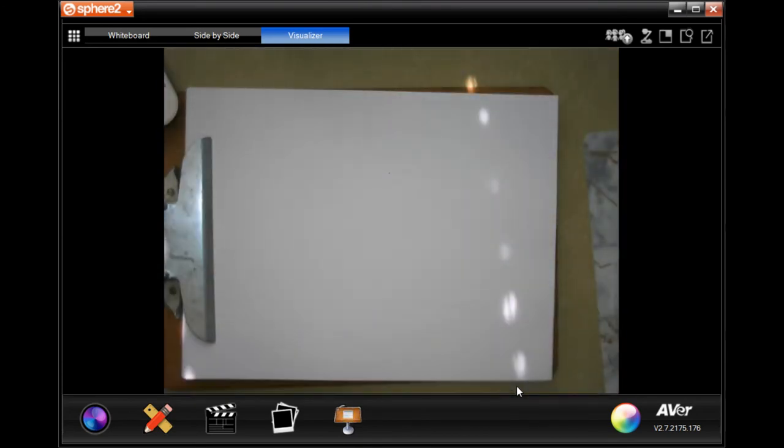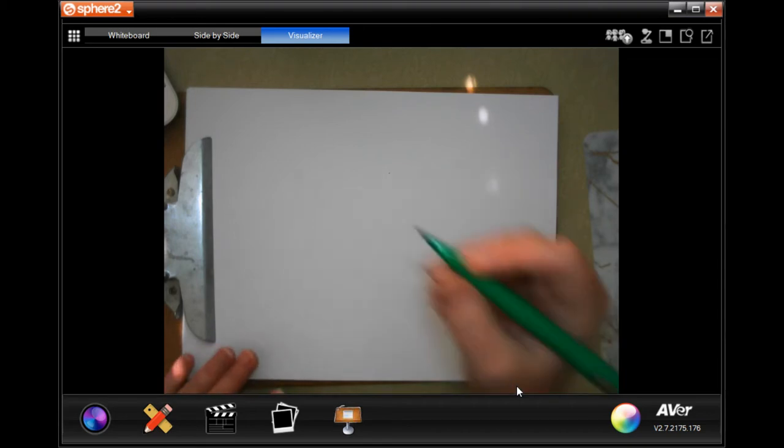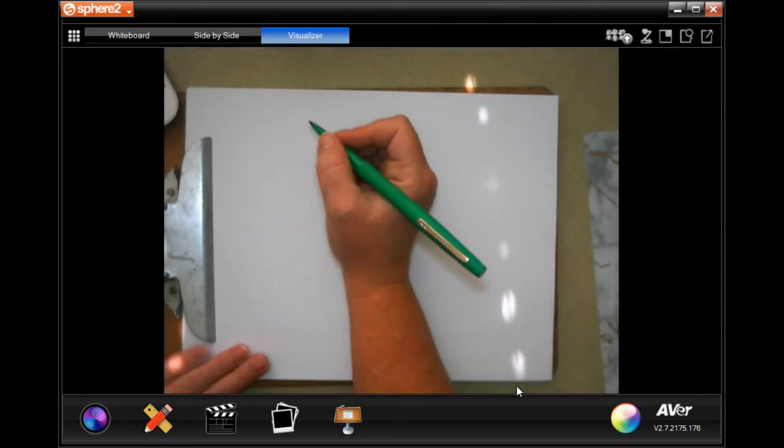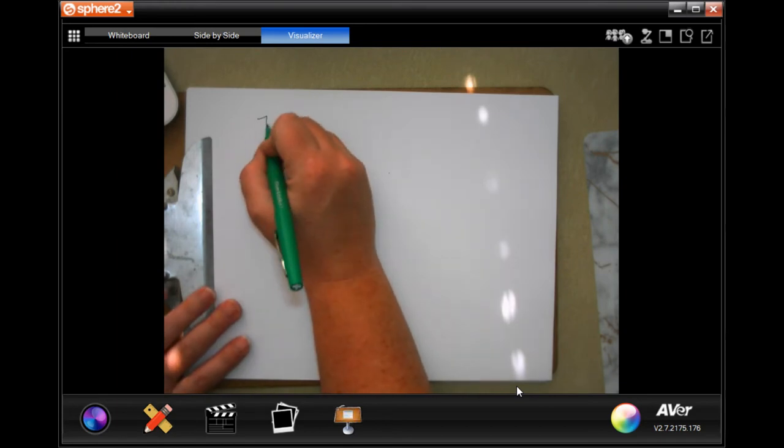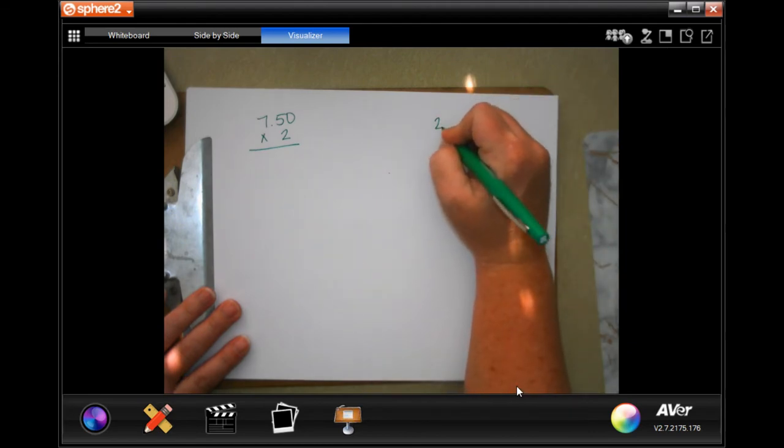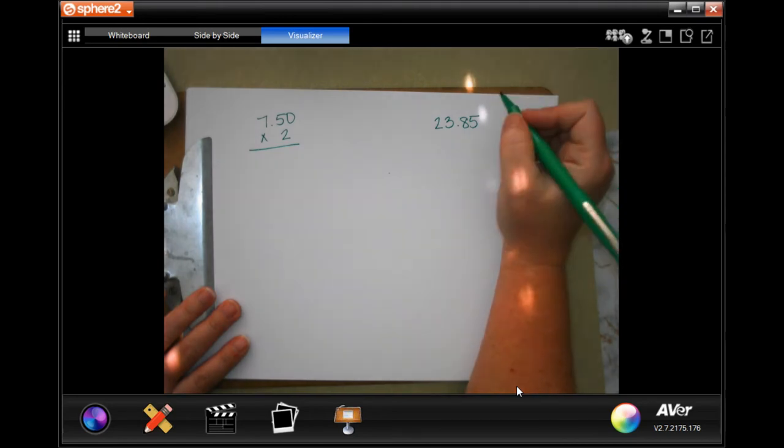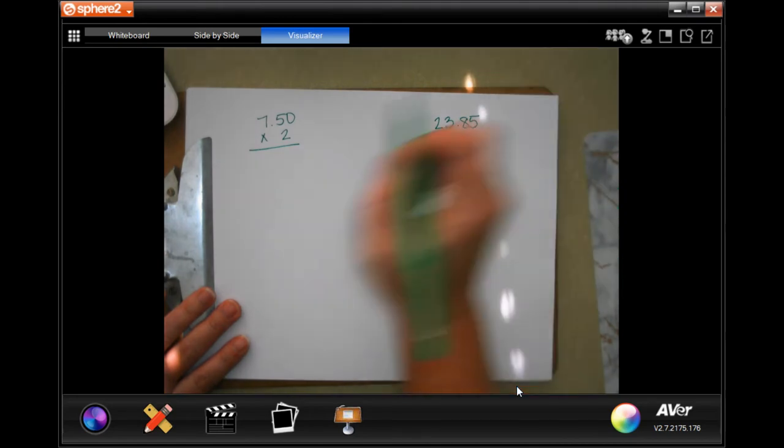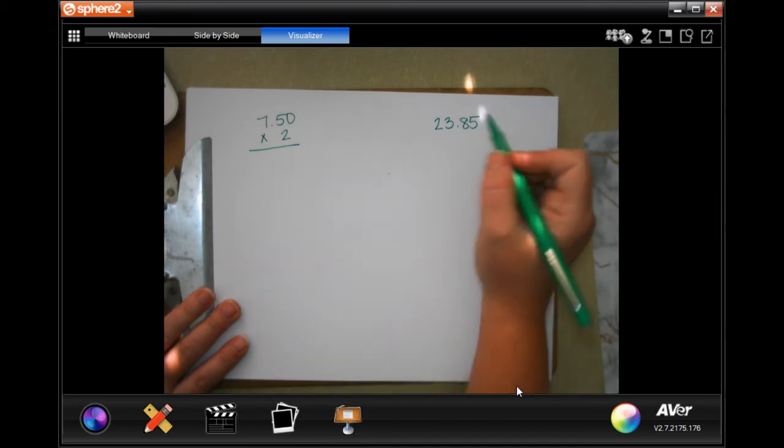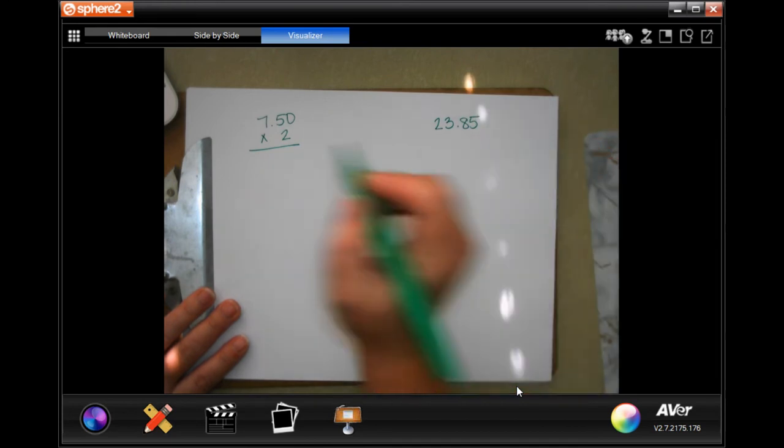All right, guys. We're going to do number 3. Number 3 says, Warren paid $23.85 and received no change. He is a member and rented two lanes. How many pairs of shoes did he rent? So first, he's a member. He rented two lanes. So $7.50 times 2. Then we need to take the money that he paid with, which was $23.85, and we're going to divide it by his change to find out how many pairs of shoes.